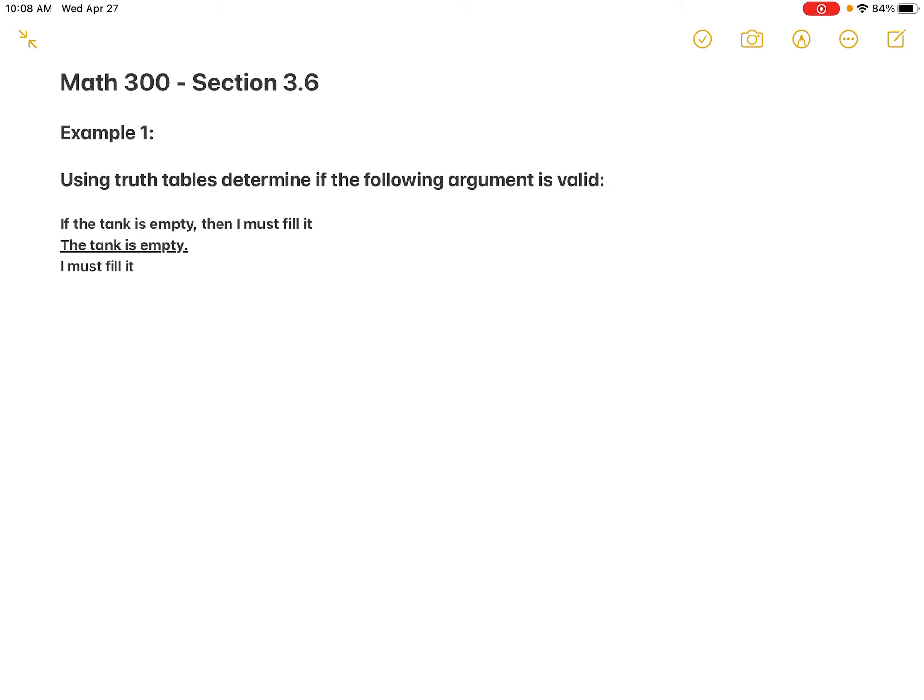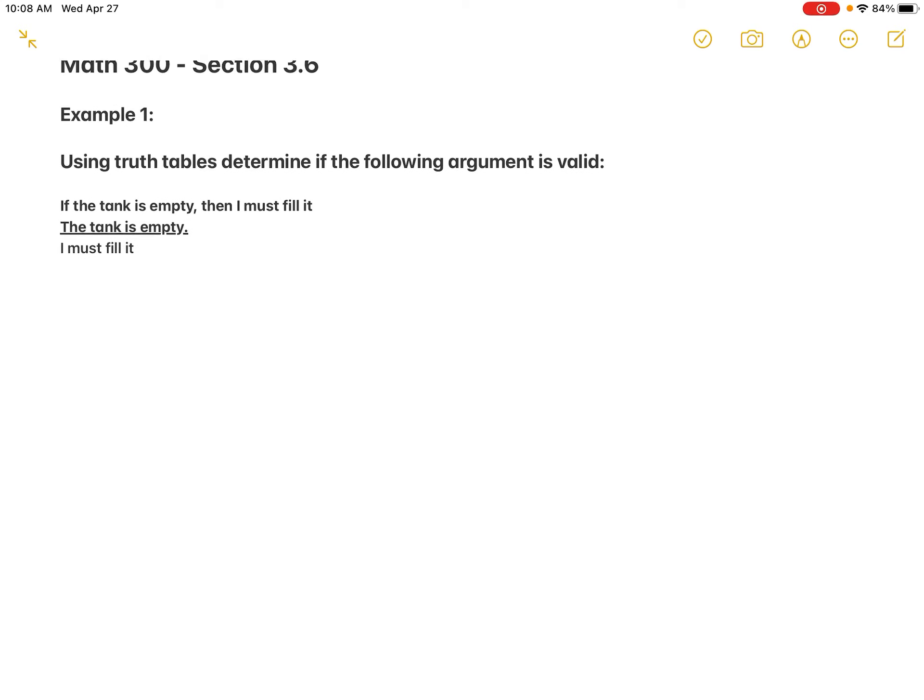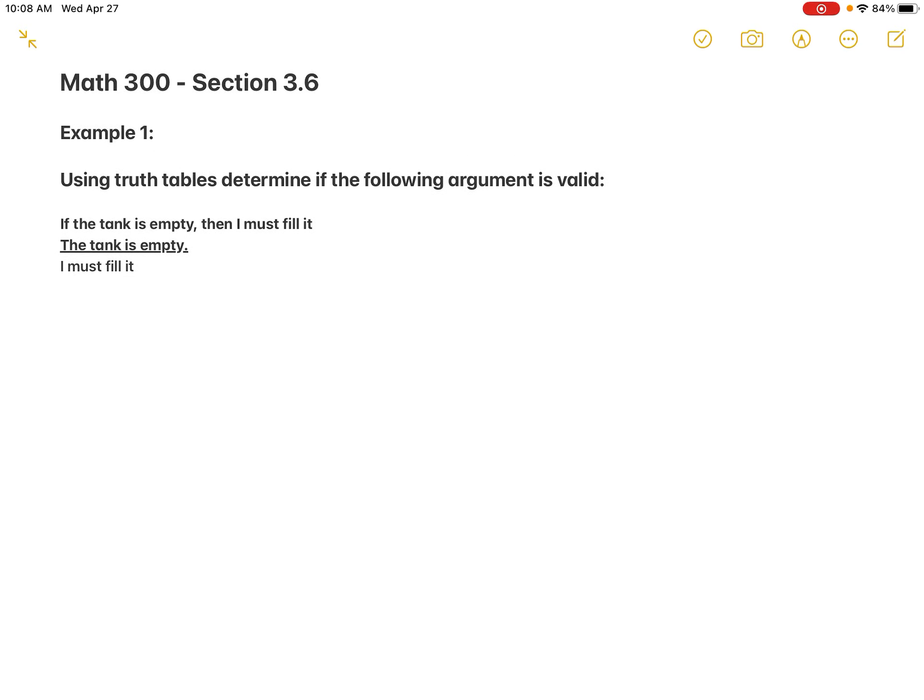I wanted to first present an argument in words: 'The tank is empty, then I must fill it. The tank is empty, therefore I must fill it.' This could be evaluated by both an Euler diagram and a truth table. I'll take this simple example to show how it's analyzed with a truth table. We're going to give things symbols — and then basically all the homework problems from now on will involve symbols, with maybe the exception of our next example.